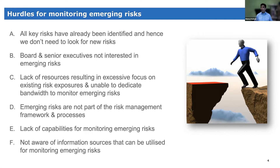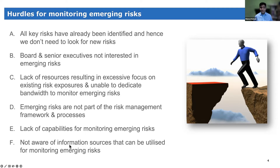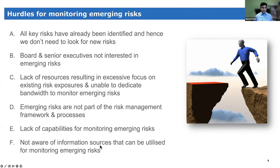The last hurdle is that teams are not aware of information sources — we may have people and capabilities, but where do we find emerging risks? Just going on Google and typing 'emerging risk for banks' returns 100,000 pages, which is not a good use of time. That's where Risk Spotlight has addressed that last hurdle. About seven years ago, when we started the Risk Spotlight portal, we aimed to bring all the relevant information to monitor emerging risk into one easy-to-use platform, so you don't have to hunt out that information.